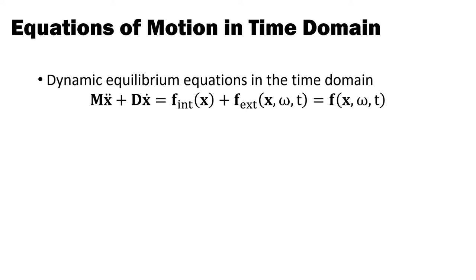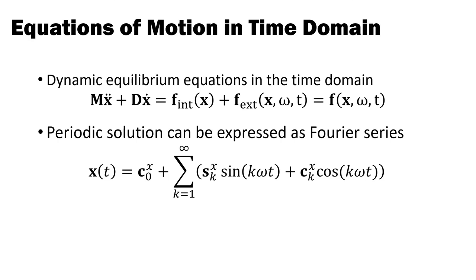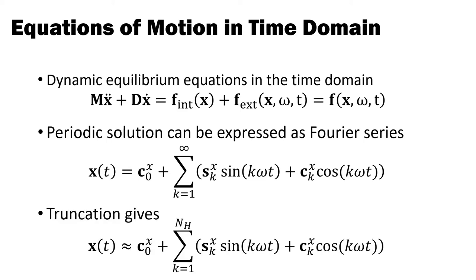Since we are only interested in steady state solutions for X and F, which by definition are periodic functions, we can express them in frequency space using Fourier series, where S and C are vectors of Fourier coefficients for the trigonometric basis functions, the so-called harmonics. In practice, we only use a finite number of harmonics and truncate the series after NH terms.